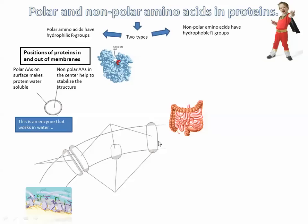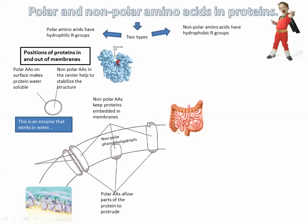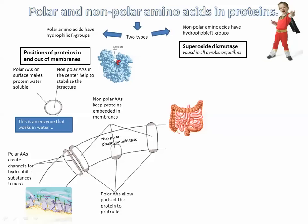For proteins embedded in a cell membrane, the amino acids in the center are nonpolar because they're surrounded by the hydrophobic tails of the phospholipids. The amino acids sticking out on either side are polar because both the inside and outside of the cell are watery. For a channel protein like a glucose transporter, the amino acids lining the inside of the channel are polar to attract the polar glucose molecule, while those touching the hydrophobic tails are nonpolar to keep it embedded in the membrane.